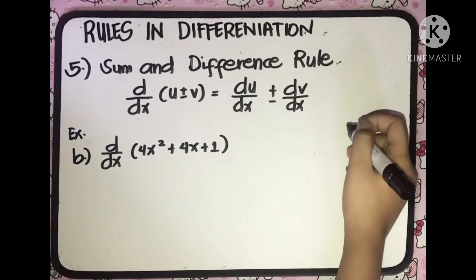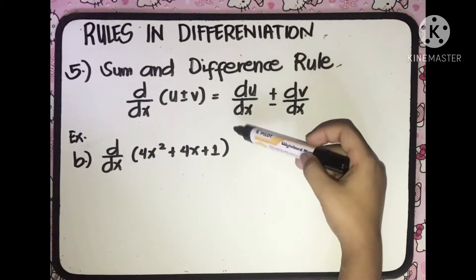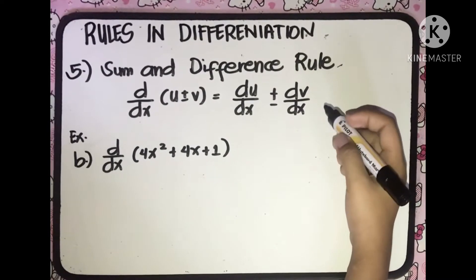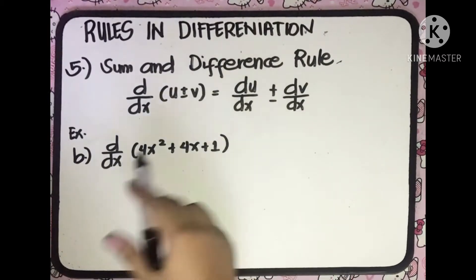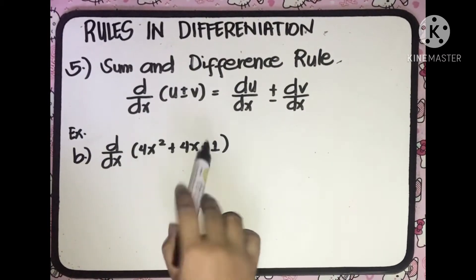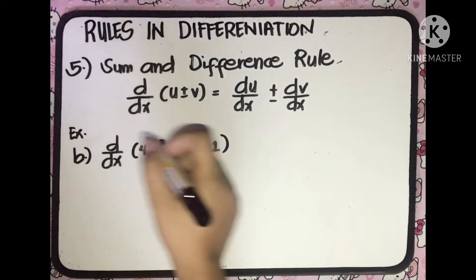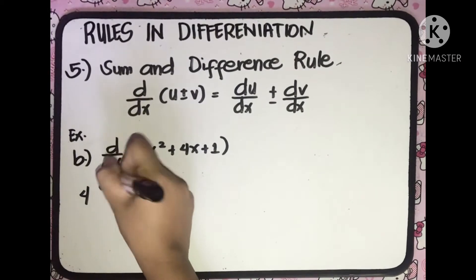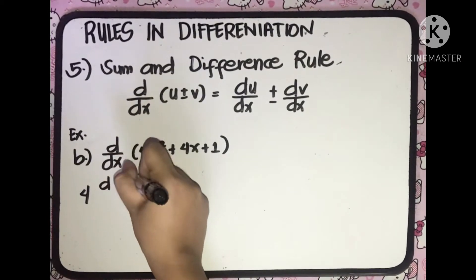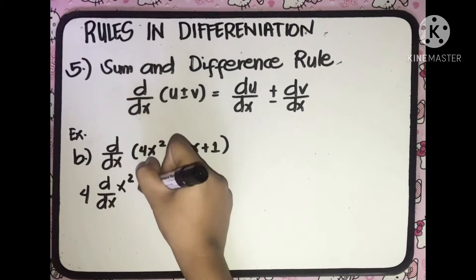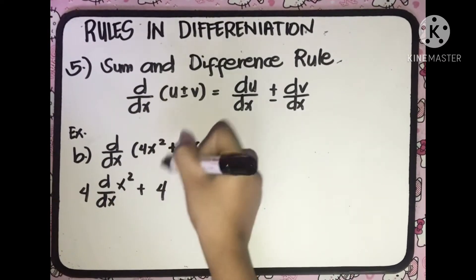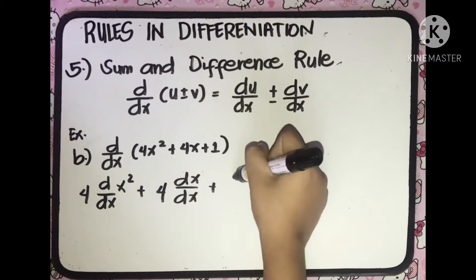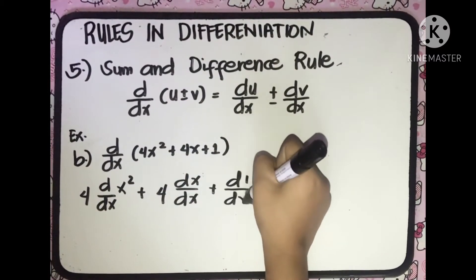For the second example of the Sum and Difference Rule, we have the derivative of 4x squared plus 4x plus 1. We distribute the derivative to each term: 4 multiplied by the derivative of x squared with respect to x, plus 4 multiplied by the derivative of x with respect to x, plus the derivative of 1 with respect to x.